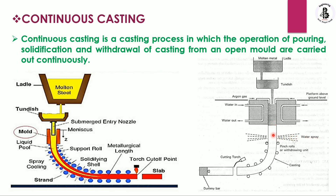As per the required shape, size, and cross-sectional area, different pinch rolls or withdrawing units are used. The cast product is continuously rolled out from molten metal into solid form. The length and cross-sectional area are controlled, and finally a cutting torch is used to cut the component to the required length.